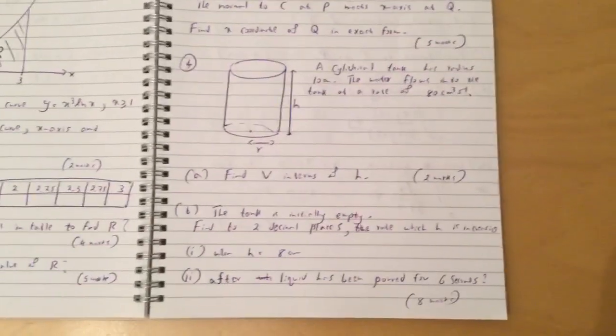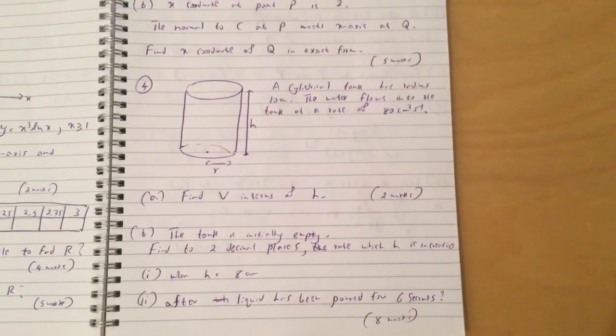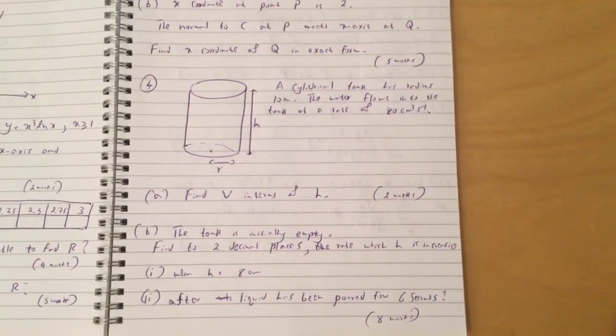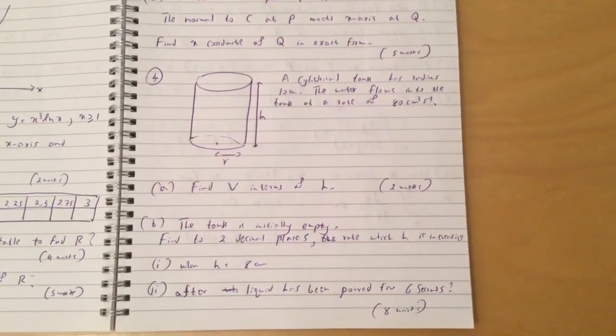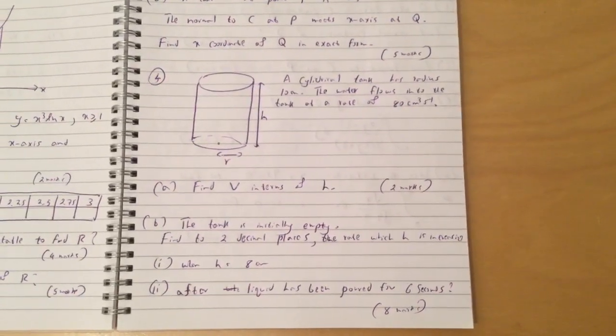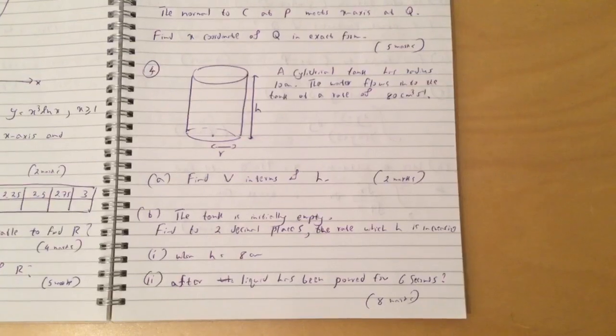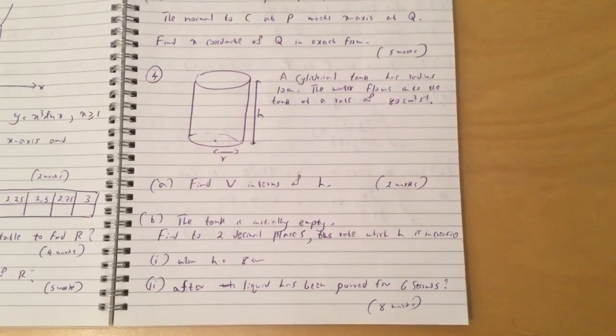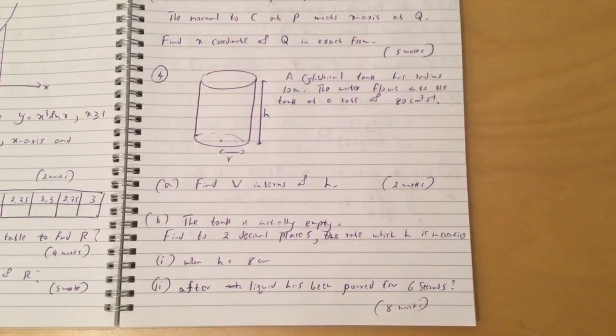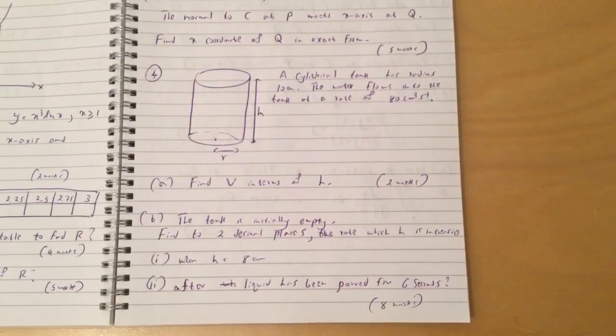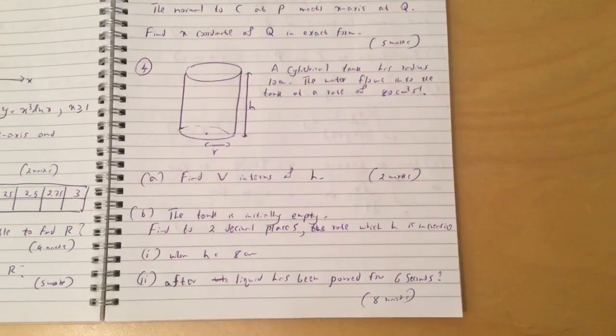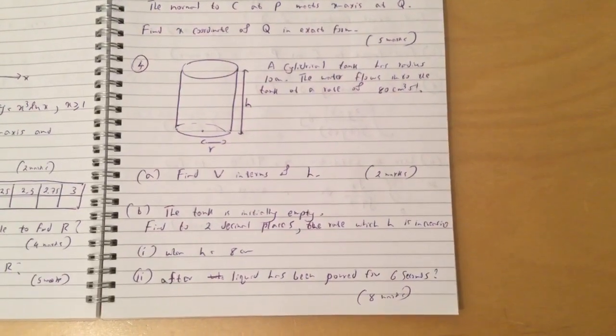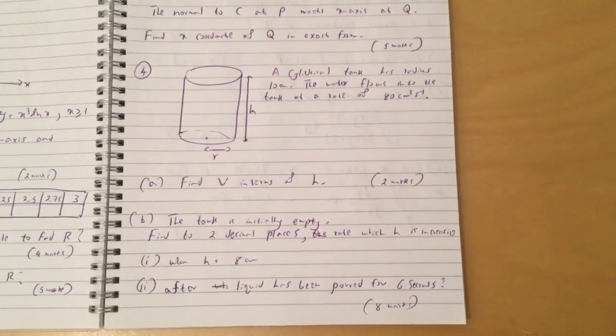Question 4: A cylindrical tank has radius 10 centimeters. The water flows into the tank at a rate of 80 centimeter cubes per second. Find V in terms of h. Question B: The tank is initially empty. Find to two decimal places the rate which h is increasing when h equals 8 centimeters. And part 2: After liquid has been poured for six seconds.